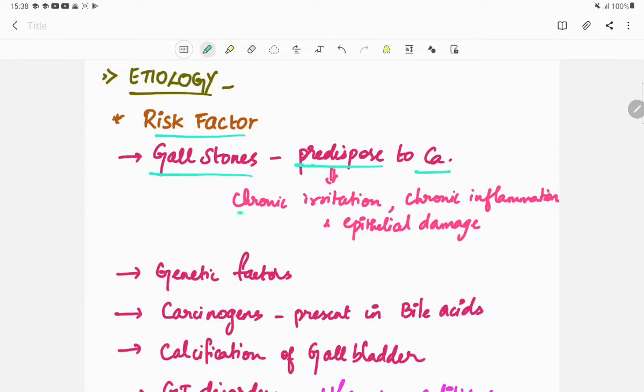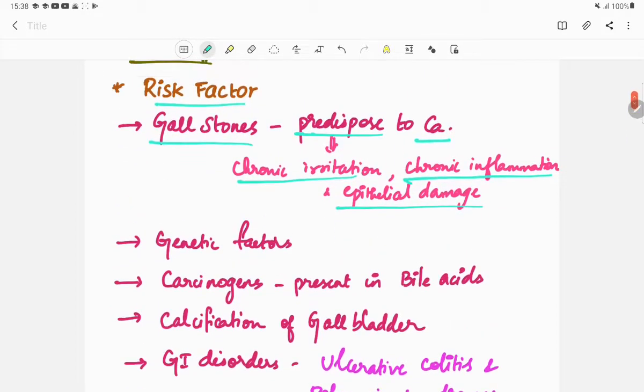Gallstones cause chronic irritation, chronic inflammation, and epithelial damage which predisposes to gallbladder carcinoma. The next risk factor is genetic factors, due to which gallbladder carcinoma is more prevalent in certain parts of the country.